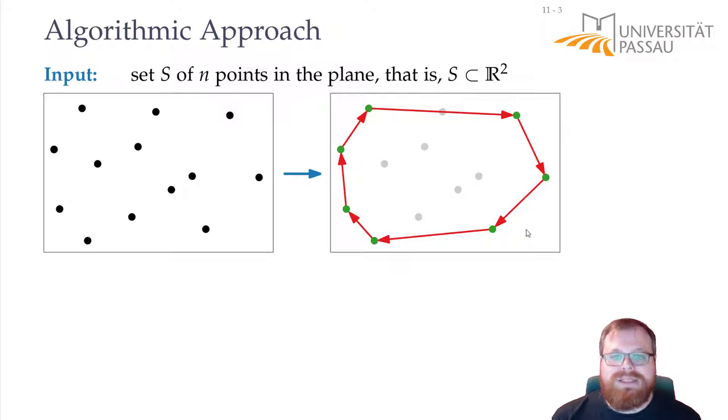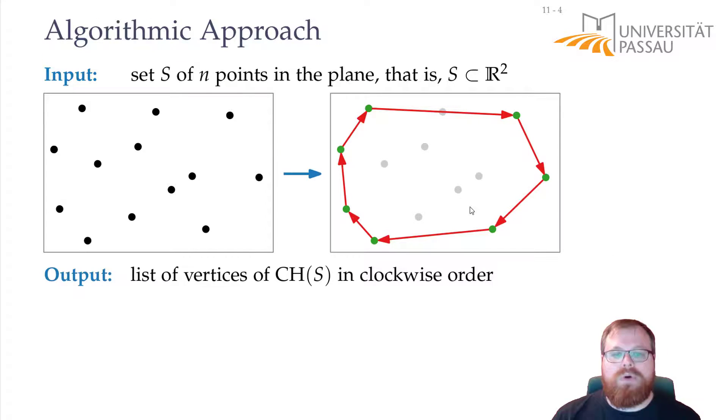If we want to store all the points it would be an infinite amount and we cannot do that. But for us only the boundary of the convex hull is really important and from that we can easily check if a point lies inside the convex hull. So what we want is a list of the vertices in clockwise order on the convex hull. This list of vertices immediately also gives us a set of directed edges that describe the boundary of the convex hull.